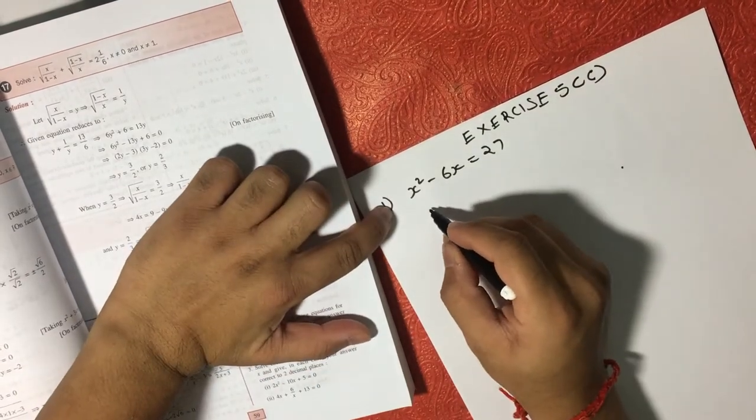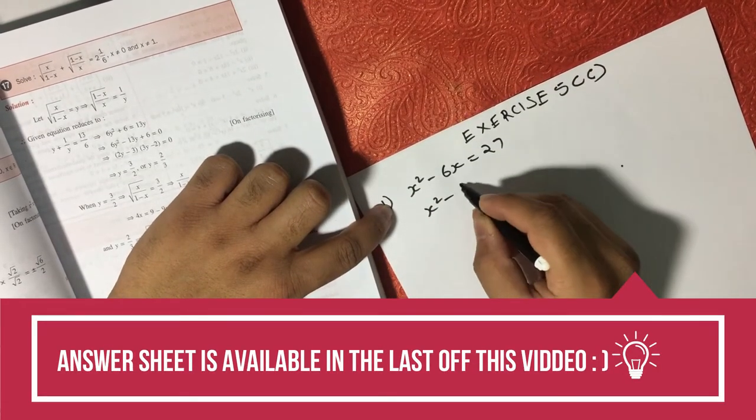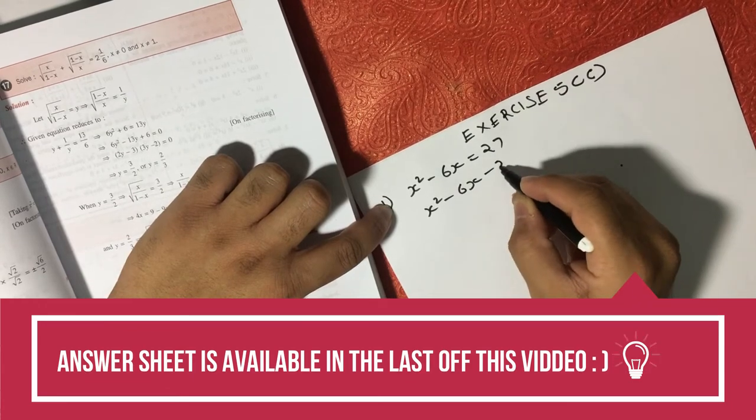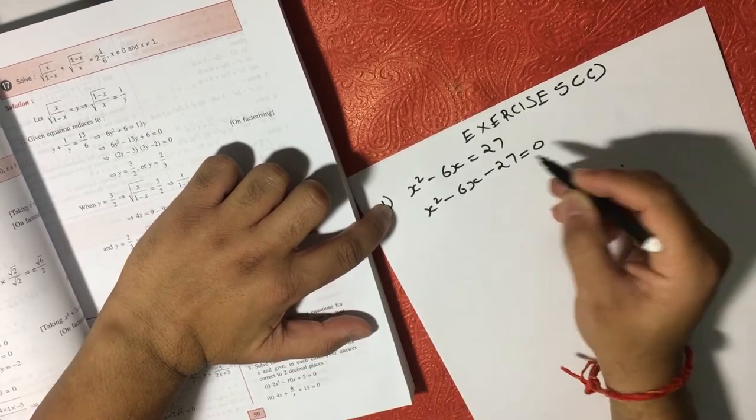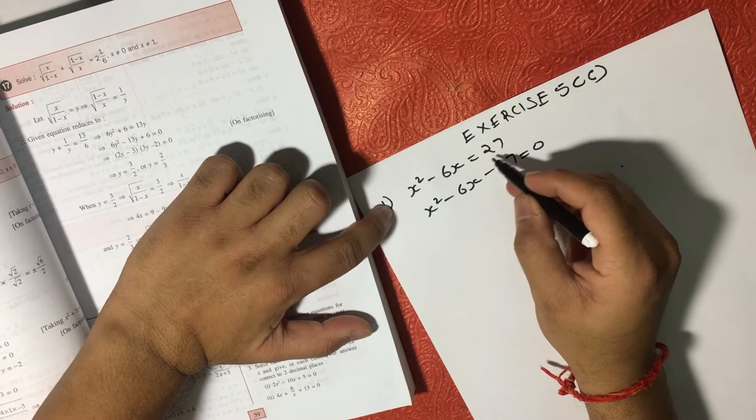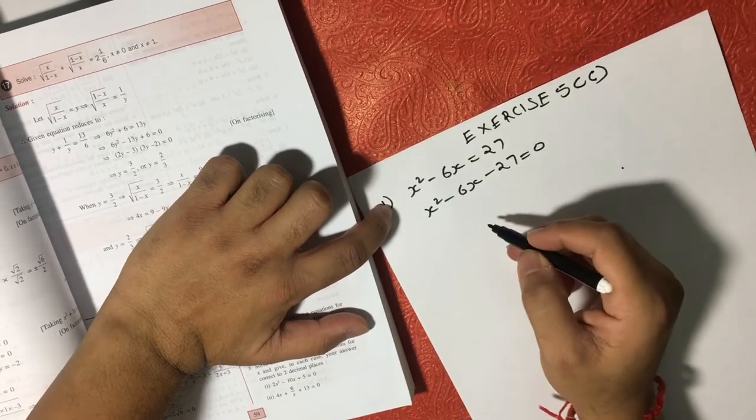So we can also write this equation as x square minus 6x minus 27 is equal to 0. I can just move this 27 to left hand side.